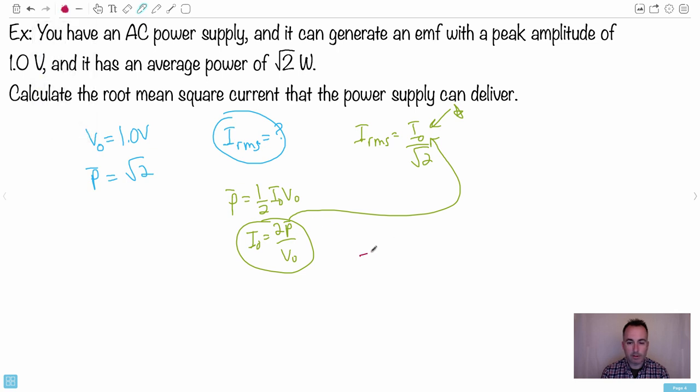So you see how now we end up with - we're just going on a little hunting trip here, and we've found everything we needed. So IRMS is just equal to I0, and I0 is this mess right here. So two times average power divided by V0.